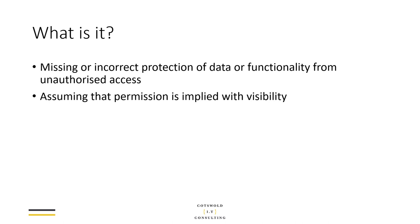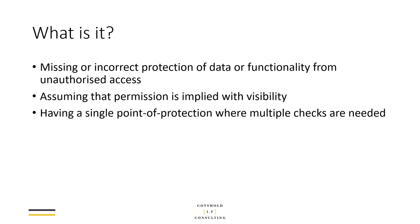There are a couple of different ways this happens. One is assuming that permission is implied by the visibility of a link, a menu, a page, or an item. We might think: if somebody can't see a link, that link is safe — because how are they going to click on it or post to it if they can't see it? But hopefully you realize that's a weak argument, because as soon as an attacker knows a page is there — and there are various ways they could find that out — that page is open for attack if it doesn't have further controls on the person's permission.